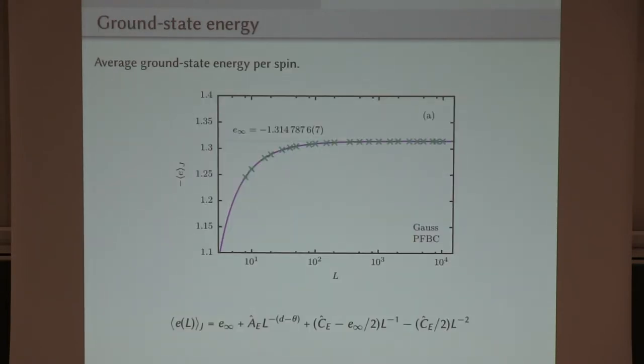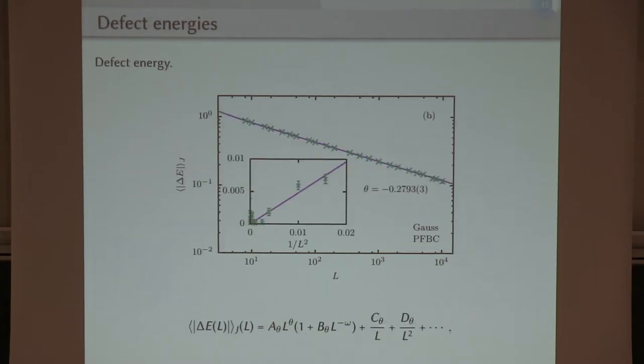So the quantities we looked at are related to excitations that you see if you change the boundary conditions. We compute a ground state, then compute a ground state after inverting all the bonds that cross one of the edges and then look at the energy difference and the excitation that is incurred by that.